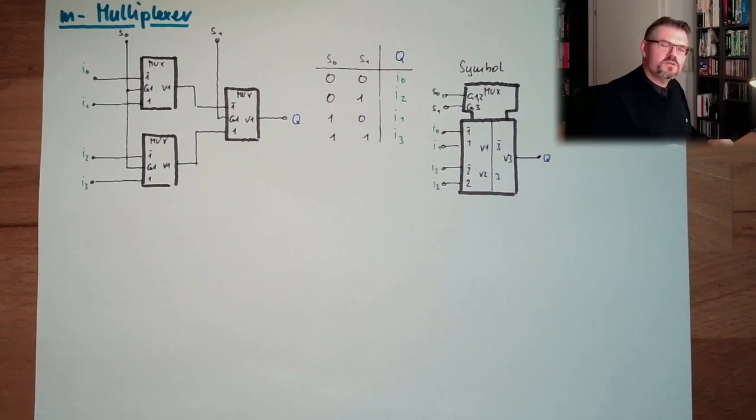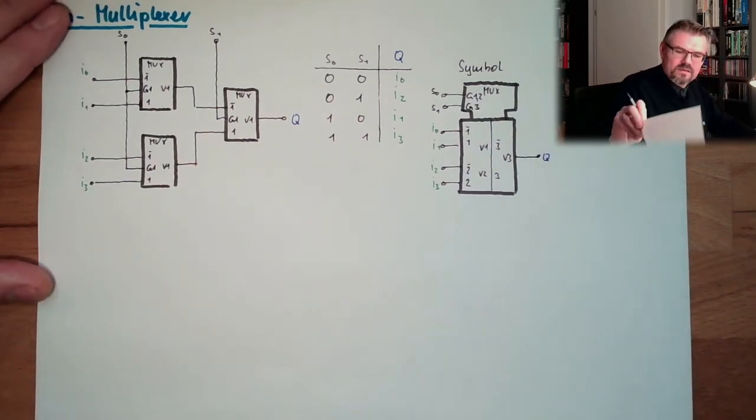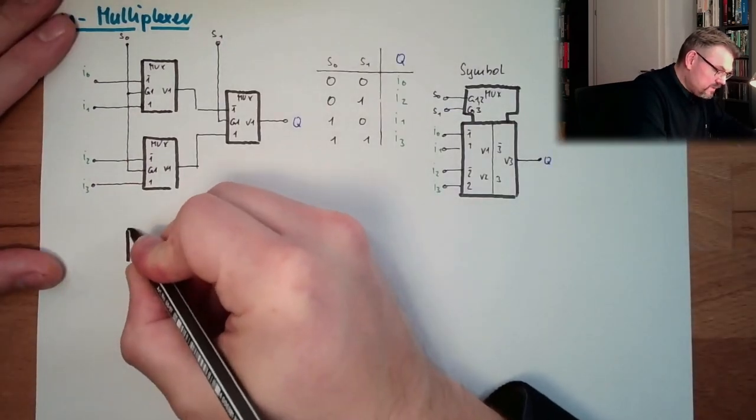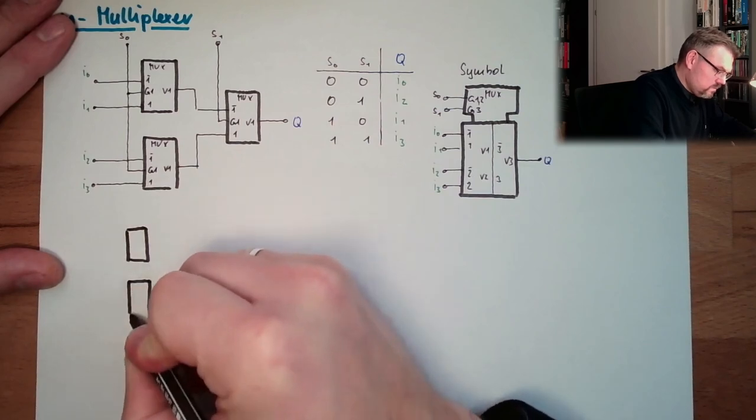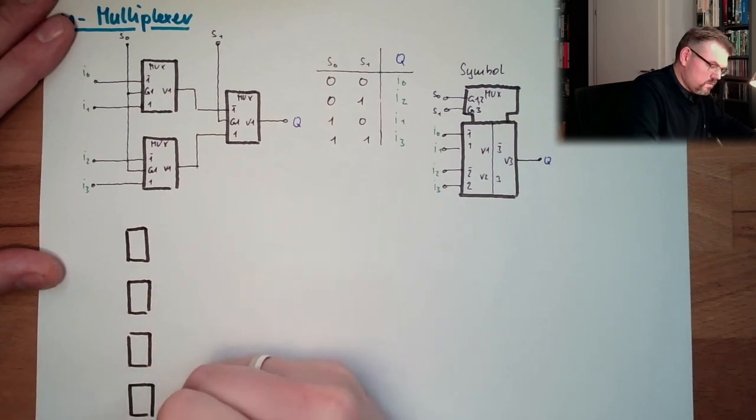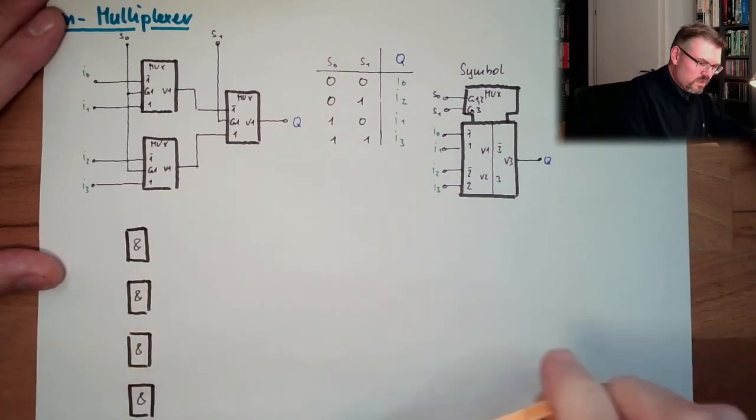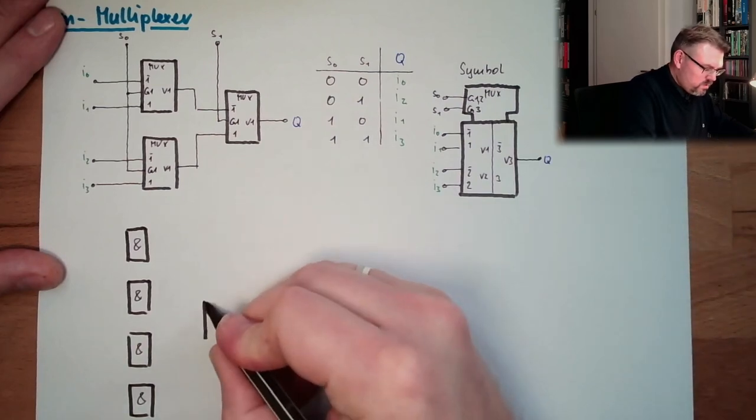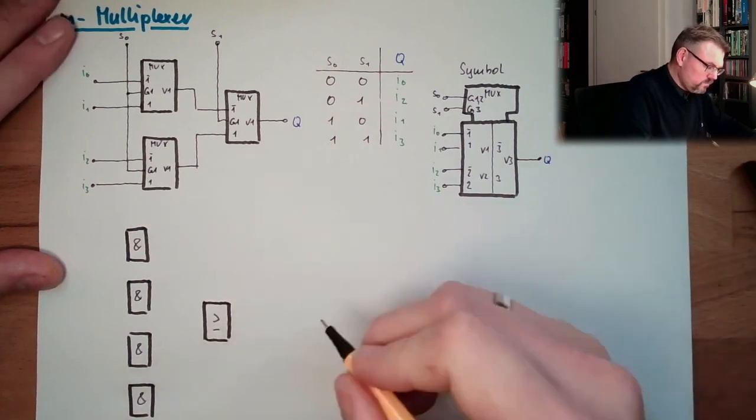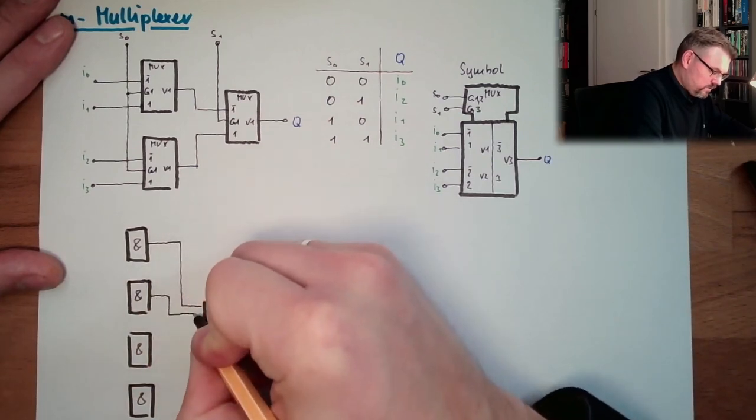There would be also another solution, a much straightforward solution. So we exactly make it like that, exactly like that. However, with more ANDs. We have bigger AND blocks.